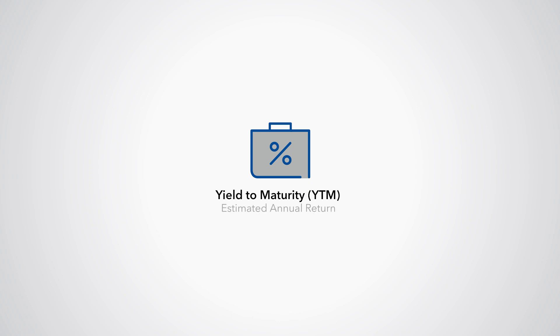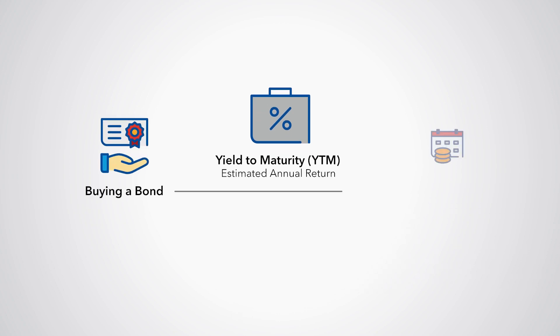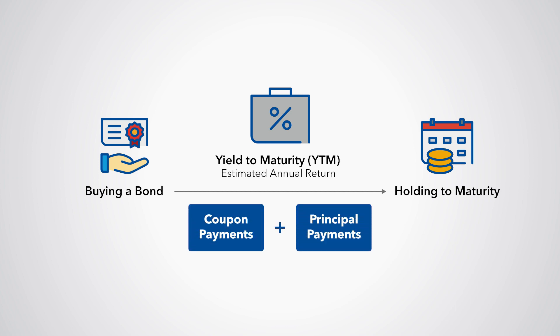Yield to maturity is the estimated annual return that we would get from buying a bond and holding it until maturity. That is, the return from all the coupon payments and the principal payments on a bond, assuming that the payments that are received before maturity are reinvested at the same rate.